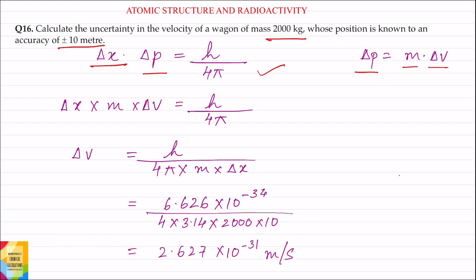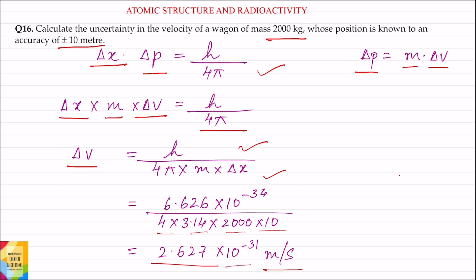Putting the value of delta p, we get delta x into m into delta v is equal to h by 4 pi. From this, delta v will be equal to h divided by 4 pi into m into delta x. Putting the values of h, 4 pi, m, and delta x in the equation, the value for uncertainty in velocity is 2.627 into 10 to the power minus 31 meter per second.